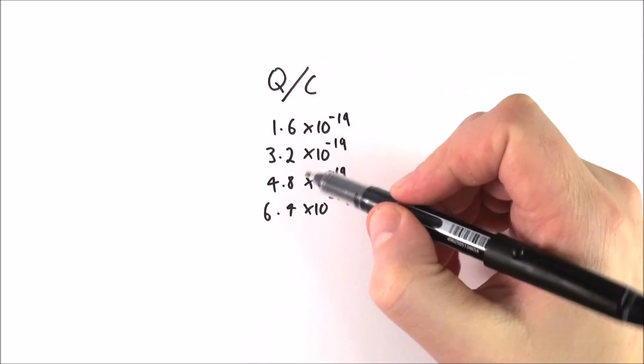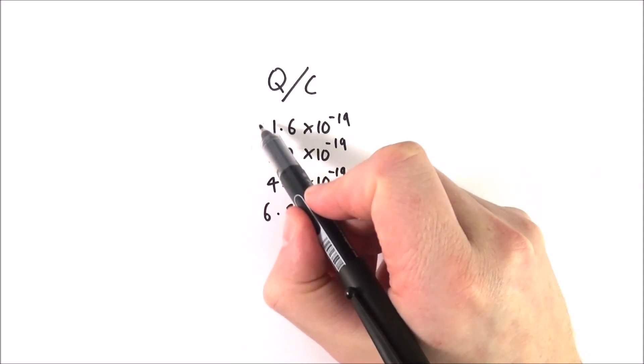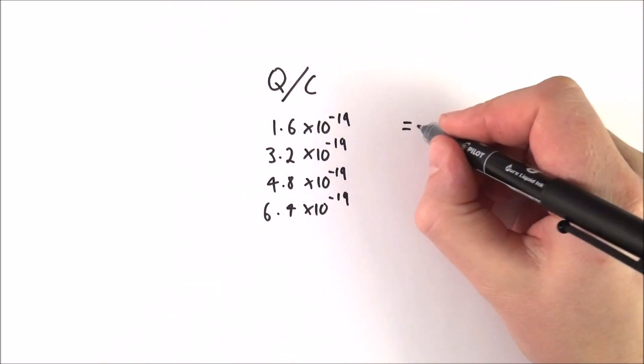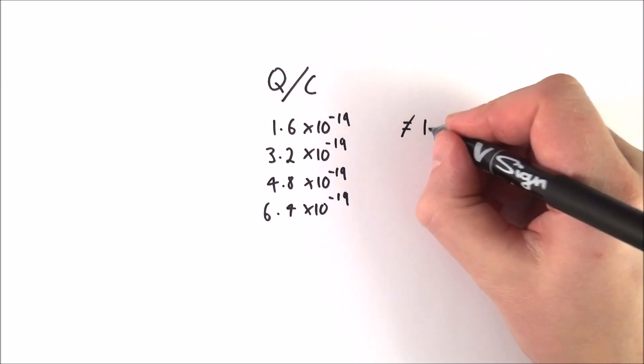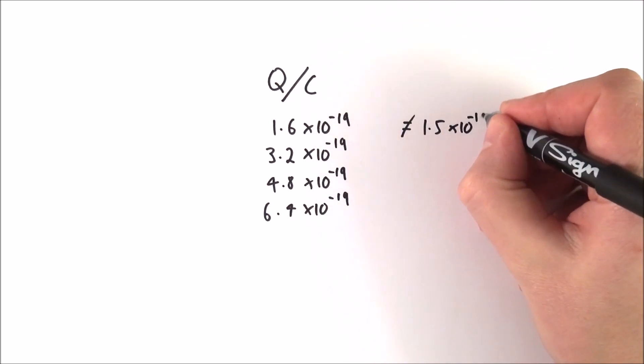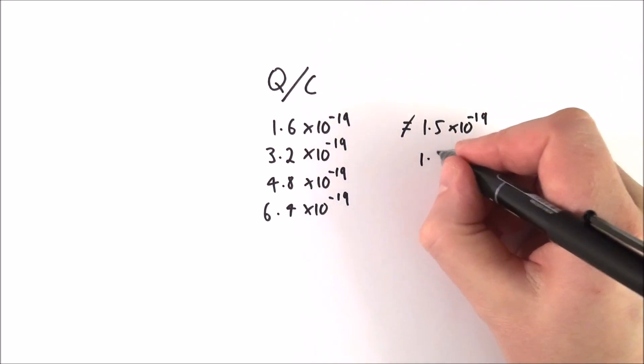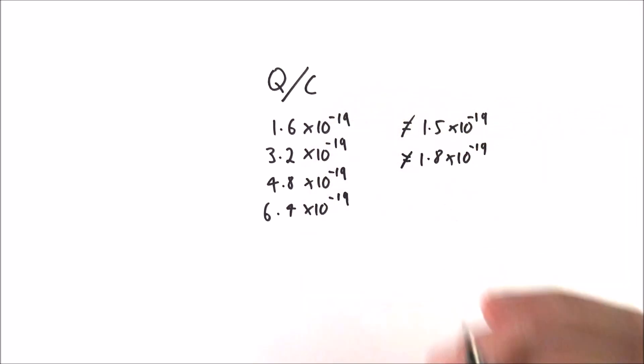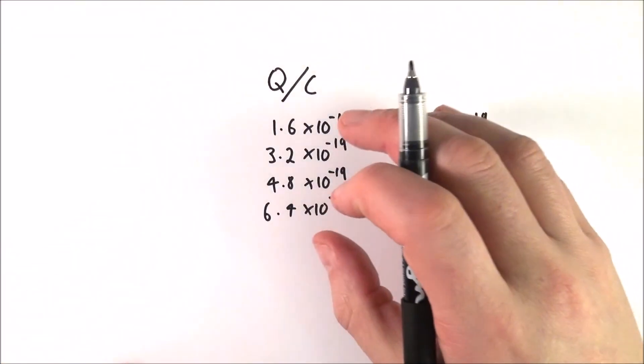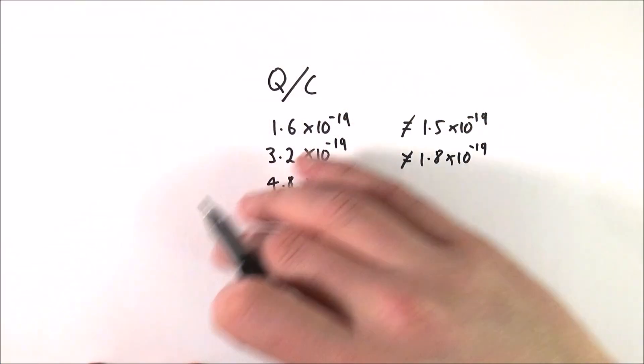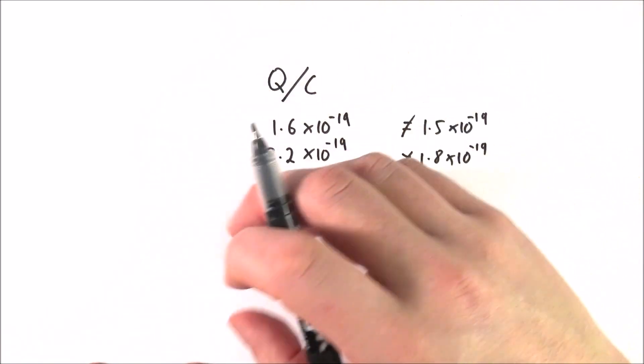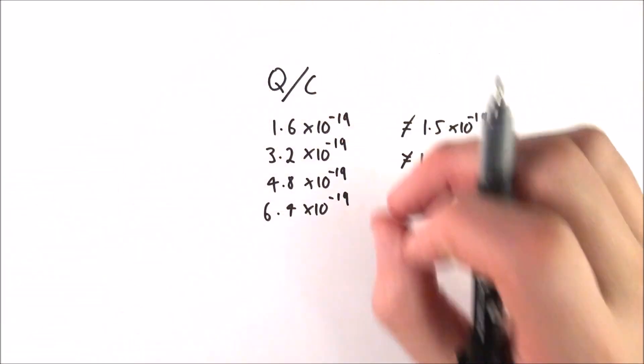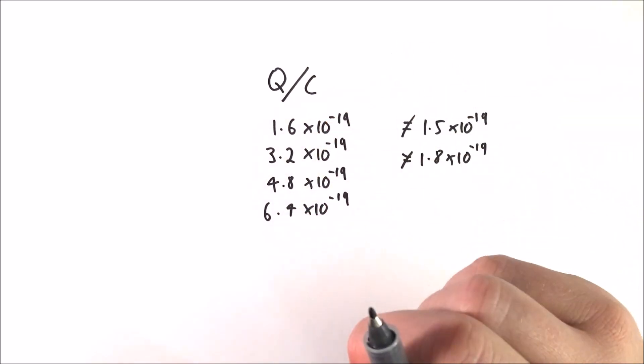But whatever value he found, it was always a multiple of this smallest number here. What he didn't find was that he didn't find that any of them were equal to things like 1.5 times 10 to the minus 19, or maybe 1.8. And this is really, really important. This means that when we look at charge, it can't just be any number on this continuous spectrum. It has to be a certain quantity. And therefore there's this quantized nature of this property called charge.